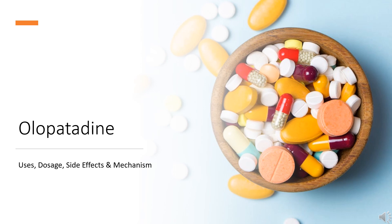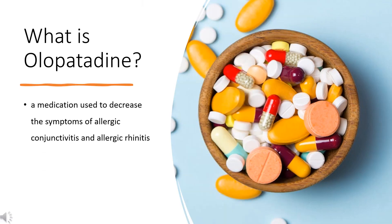Olopatadine is a histamine H1 antagonist used to treat allergic conjunctivitis and rhinitis. In this video, let's find out: what is olopatadine, what is olopatadine used for, contraindications, what are the side effects of taking olopatadine, how does olopatadine work, and how to use olopatadine.